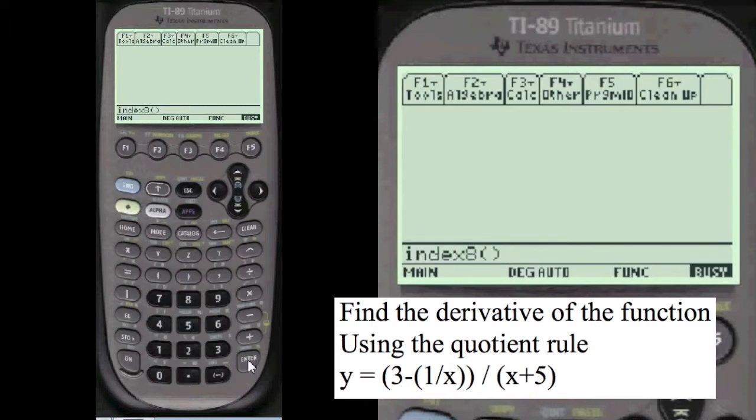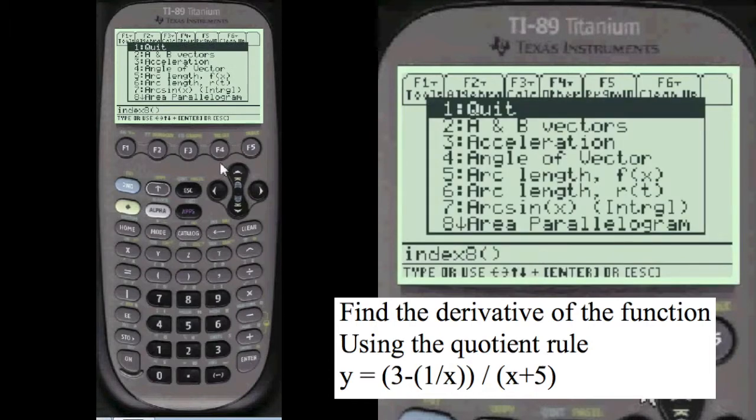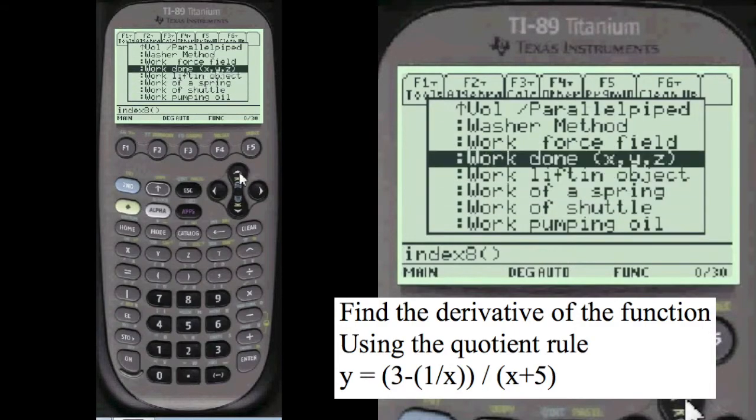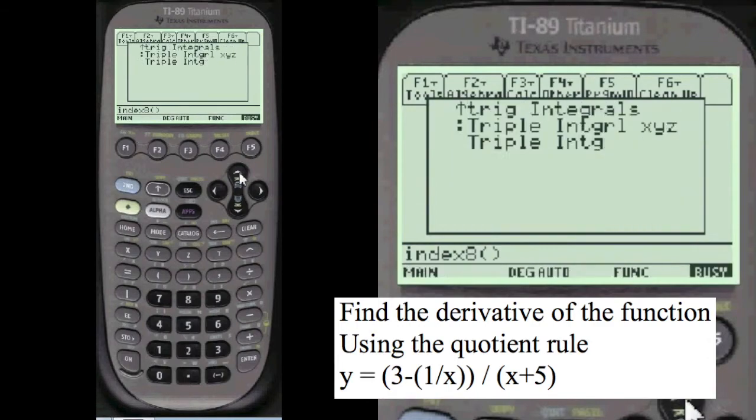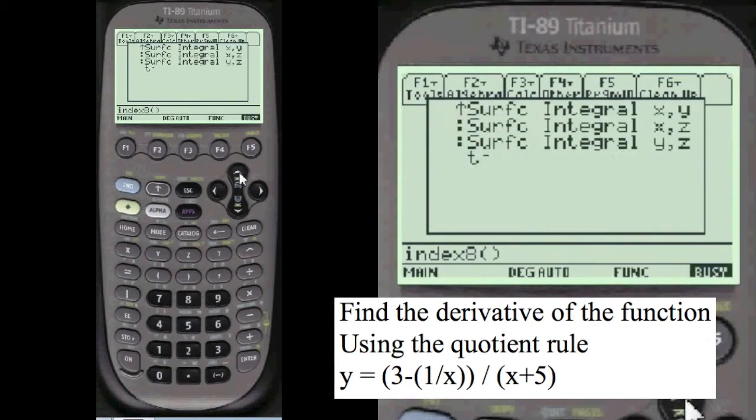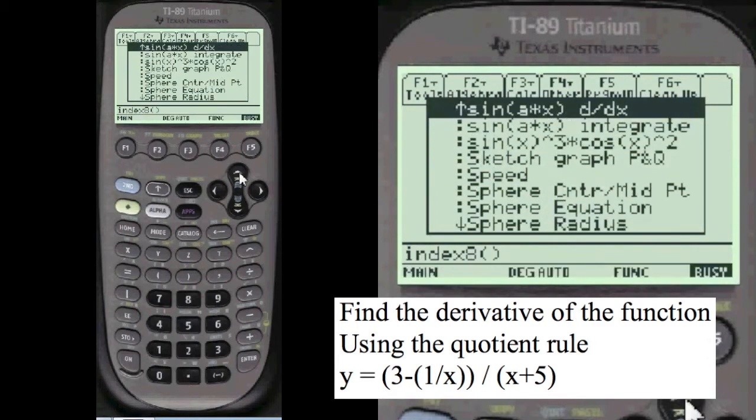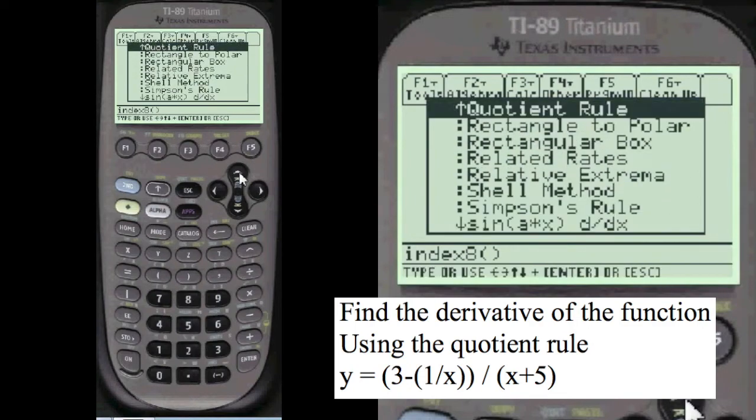We go to my main menu, index 8, and then I'm going to go up to get to the Q section because Q is closer to W than to A. I'm going to scroll up here to the quotient rule, choose that.